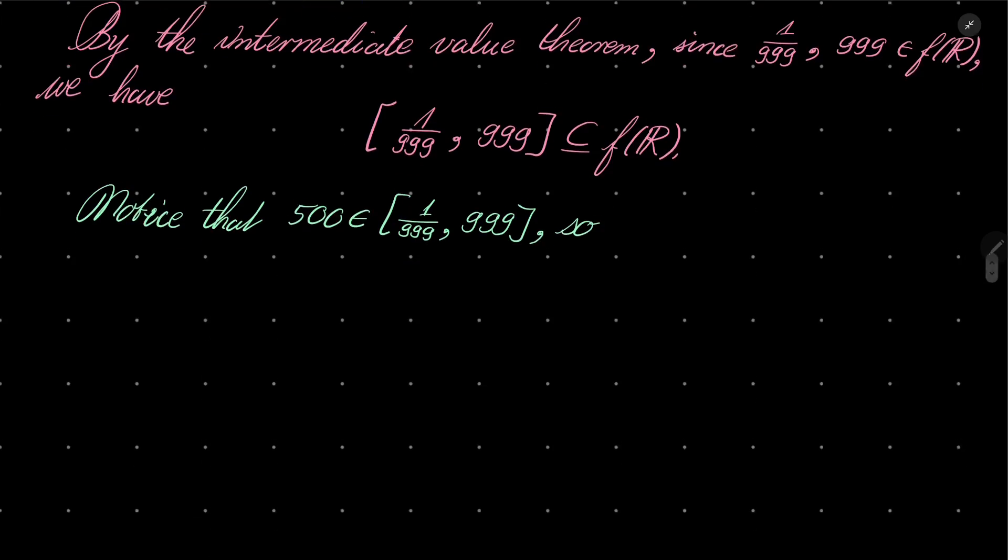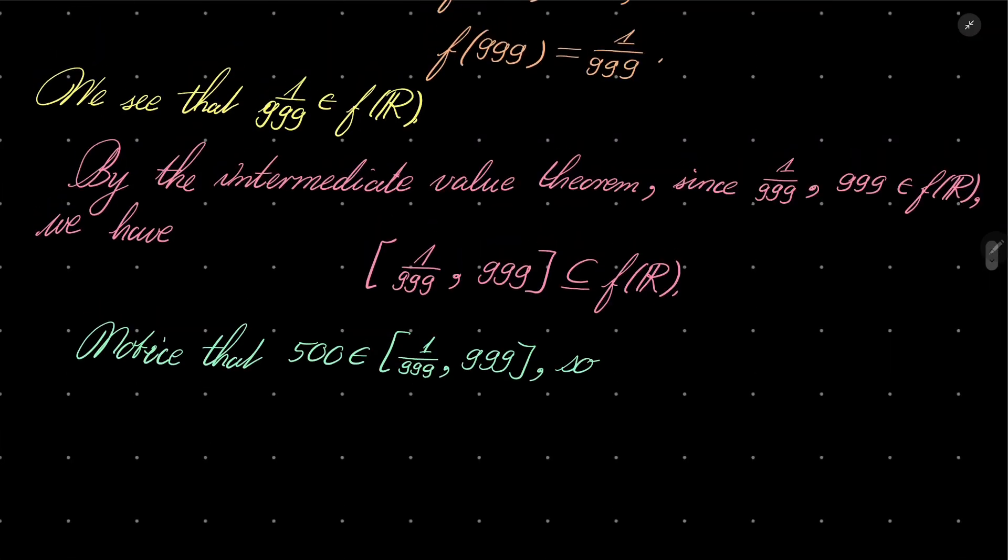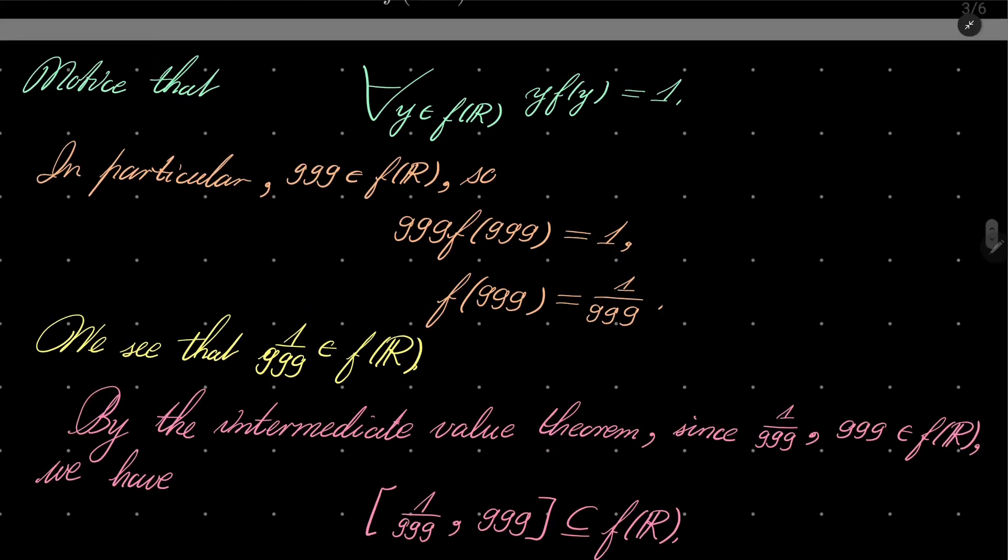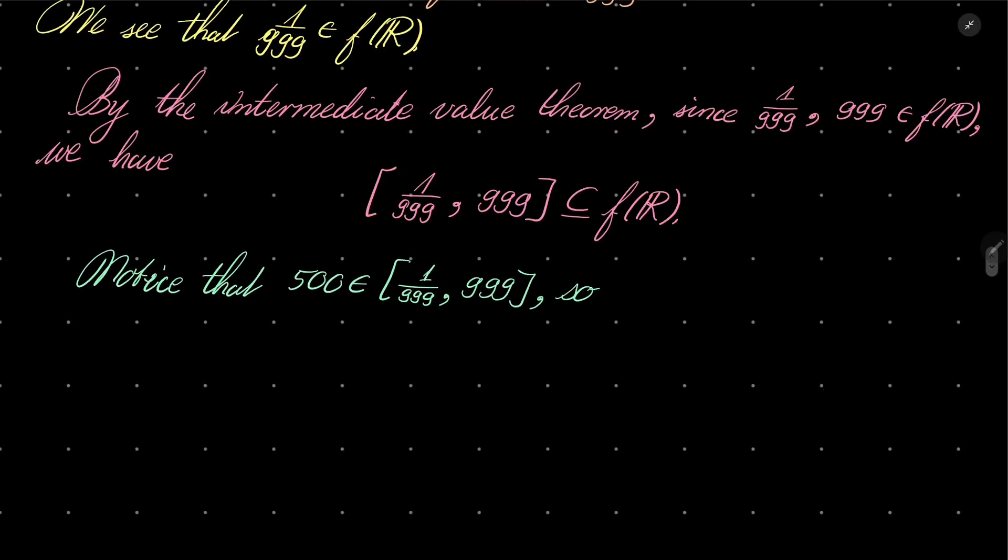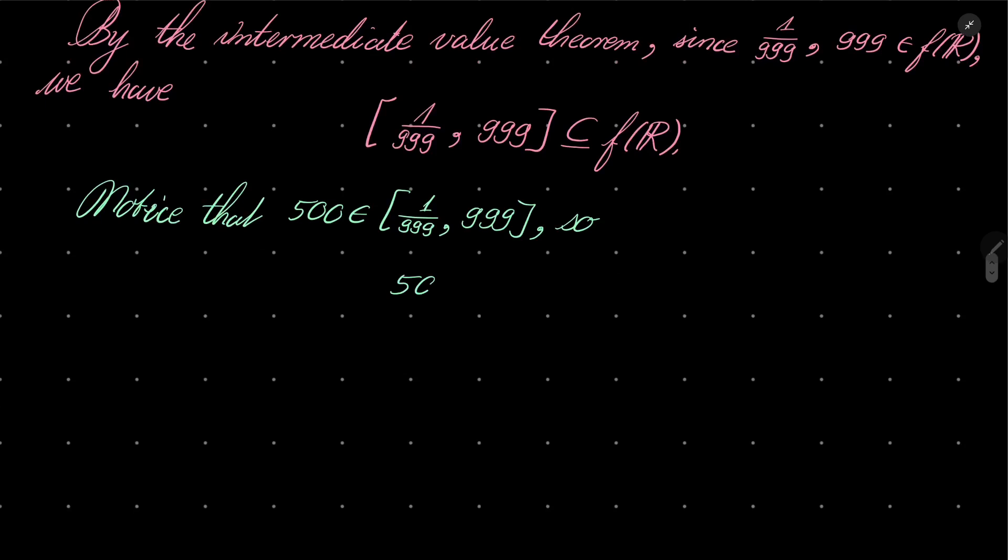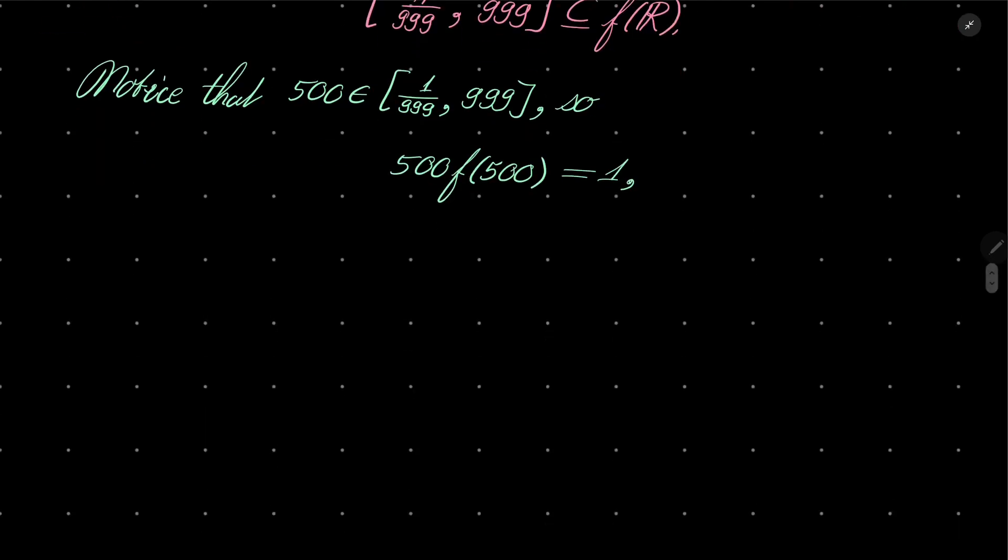So how can we find f of 500? Well, from this equation. 500 times f of 500 equals 1, so f of 500 equals 1 over 500.